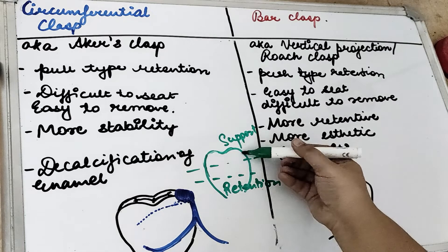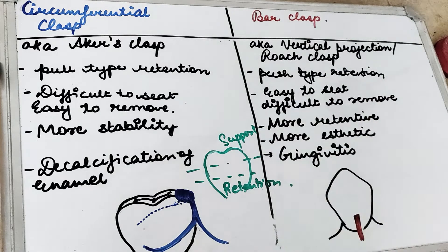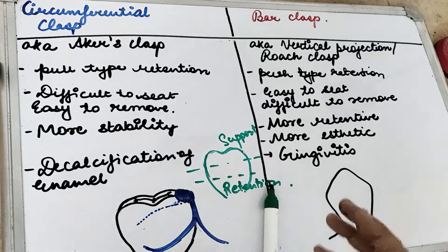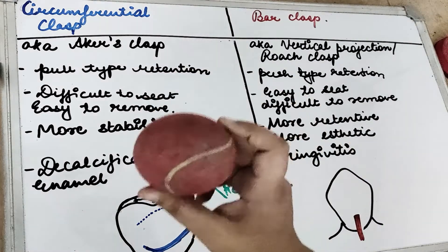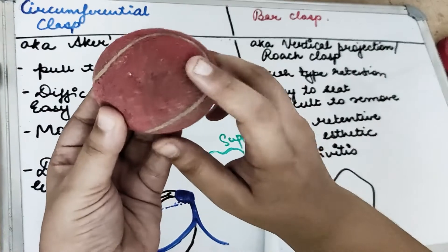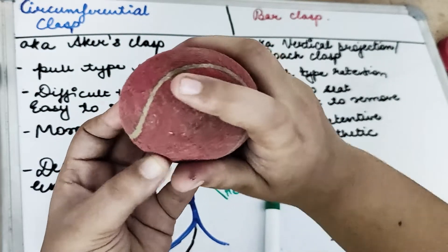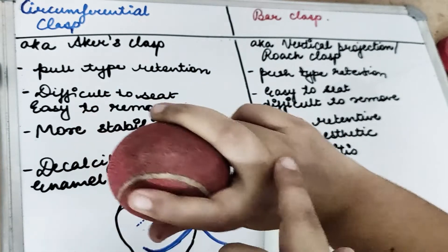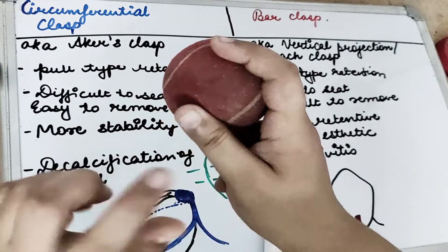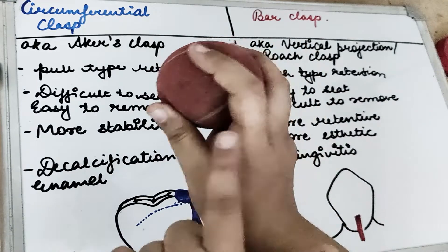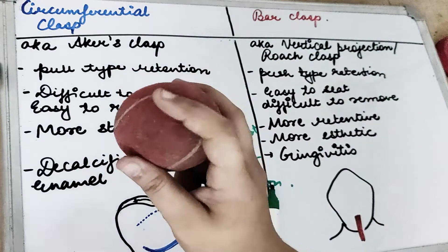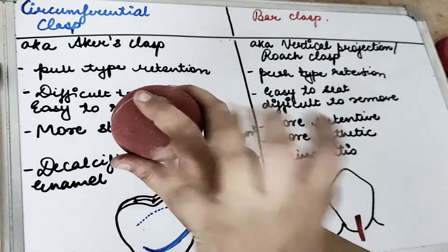Whatever part is at the occlusal one third provides support, and whatever is at the gingival one third provides retention. The circumferential clasp covers the tooth: starting with a rest, the retentive arm starts from the occlusal but ends in the gingival one third. Then we have a reciprocating arm to counteract the forces which the retentive arm is putting. This is the circumferential clasp.